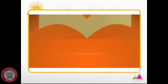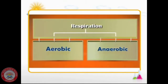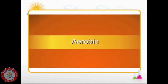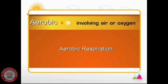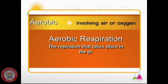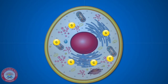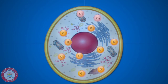There are two types of cellular respiration: aerobic and anaerobic. Let us first see aerobic respiration. Aerobic means involving air or oxygen. So aerobic respiration means the respiration that takes place in the presence of oxygen. In aerobic respiration, inside the cell, the glucose is broken down in the presence of oxygen to release energy.